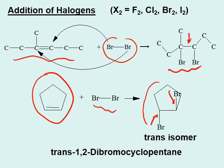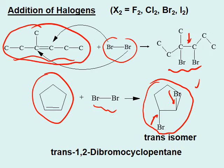In a ring compound like this, there is restricted rotation — that means you can't rotate trans to cis. Only by breaking a bond can you convert trans to a cis isomer. So keep this in mind: addition of halogen takes place in an anti fashion, meaning one halogen gets bonded from the bottom and the other from the top.